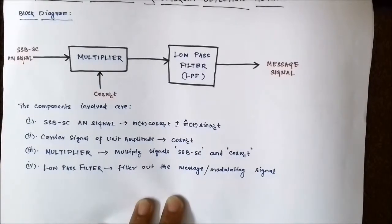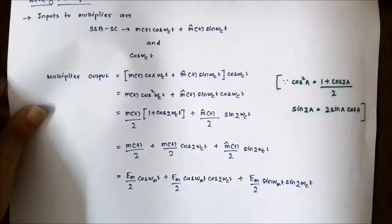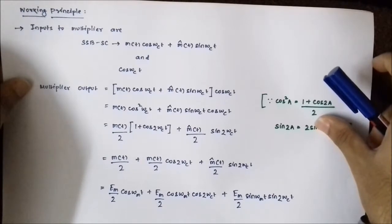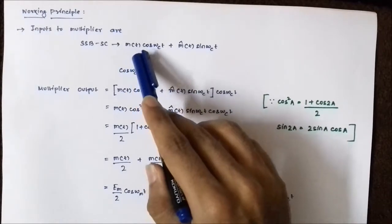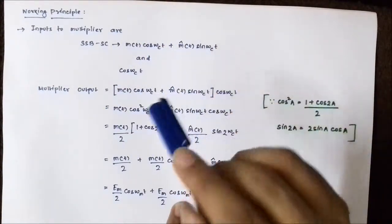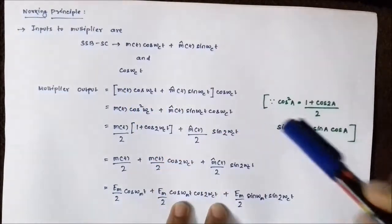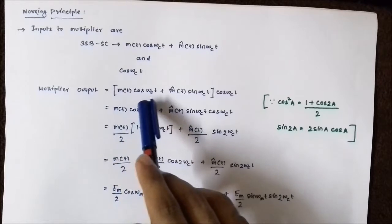Please check out my videos on SSB generation using the filter and phase shift methods for better context. Now, the working principle of synchronous or coherent detection: referring to the block diagram, the two inputs to the multiplier are (1) the SSB-SC signal m(t)·cos(ωc·t) + m̂(t)·sin(ωc·t) — using the plus sign for simplicity — and (2) the carrier signal cos(ωc·t) of unit amplitude. The output of the multiplier is the product of these two signals: [m(t)·cos(ωc·t) + m̂(t)·sin(ωc·t)] × cos(ωc·t).